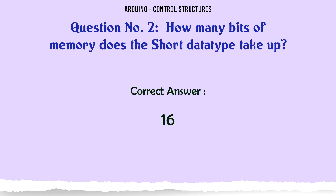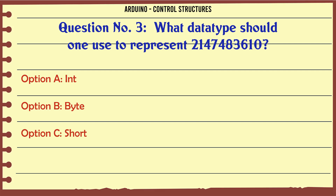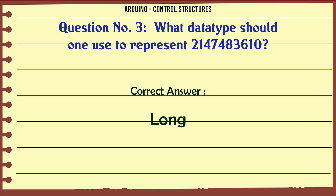What datatype should one use to represent 2147483610? A: int. B: byte. C: short. D: long. The correct answer is long.